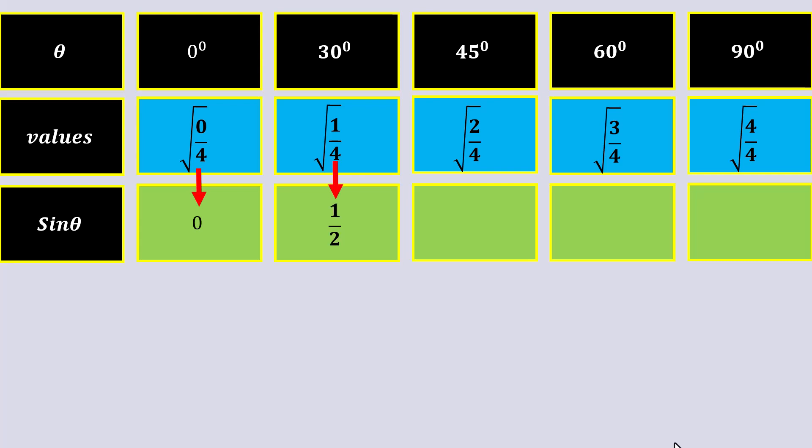Under root 2 over 4 as 1 over under root 2. Under root 3 over 4 as under root 3 over 2, and under root 4 over 4 as 1.